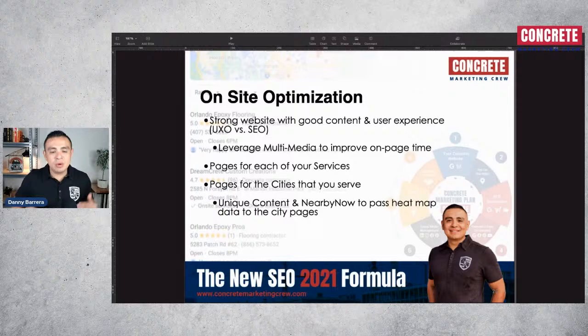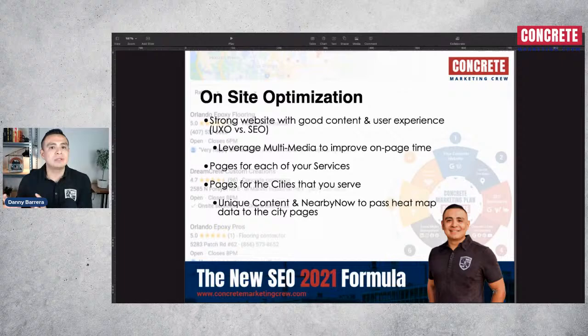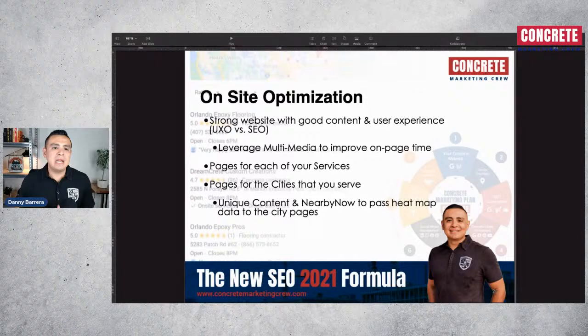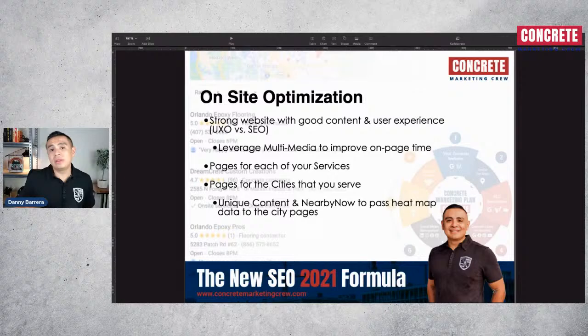There is one thing that Google tracks called the 'last click.' When someone makes a search — say, 'garage floor epoxy in Miami' — they come across a Google My Business listing, scroll by, engage with it, go back out, keep scrolling, and eventually click on a website. That website is the last place they visited. Google analyzes the dwell time of that visitor on that website, and then whether that user goes back out and makes another related search — and if so, will Google show that same website or a different one?